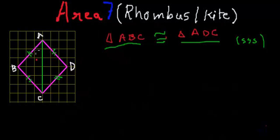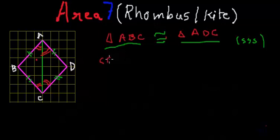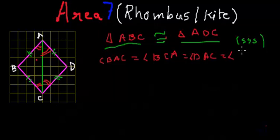Since both triangles are congruent, angle BAC is equal to angle DAC — corresponding angles of congruent triangles. Similarly, angle ACB equals angle ACD. Also, triangle ABC is an isosceles triangle where AB equals BC, so the base angles are equal. Therefore all four angles — angle BAC, angle BCA, angle DAC, and angle DCA — are equal.